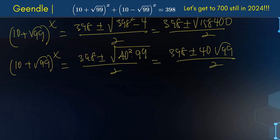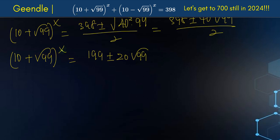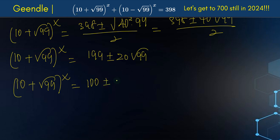So we have (10 + √99)^x equals (398 ± 40√99) / 2. Dividing through by 2, we get 199 ± 20√99. Now let's look at this: 199 is 100 plus 99, so we're going to write 100, plus or minus 20√99.